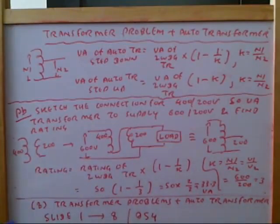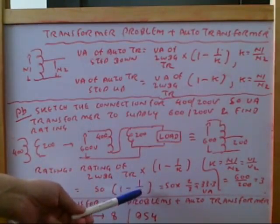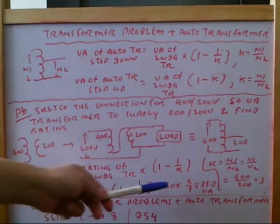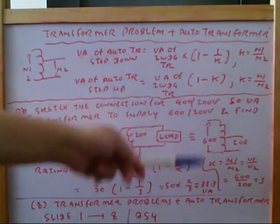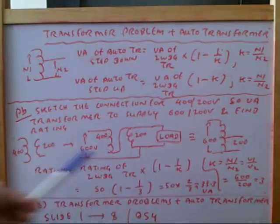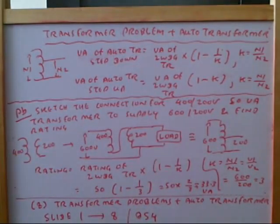So rating of the two winding transformer is 50, 1 minus 1 by k, 1 by k is 1 by 3. So that is 50 multiplied by 2 by 3, so 33.3 VA. So this is the way that we calculate the rating.